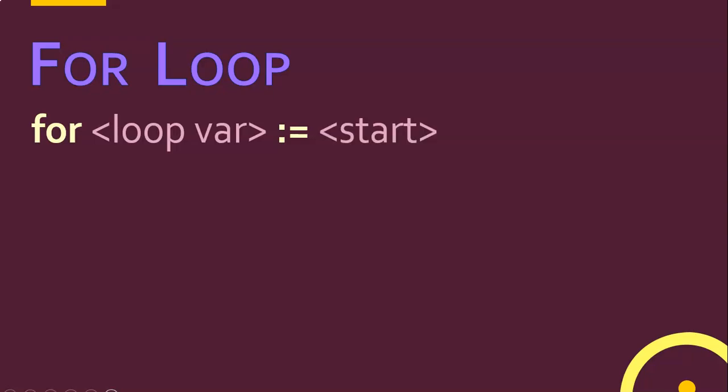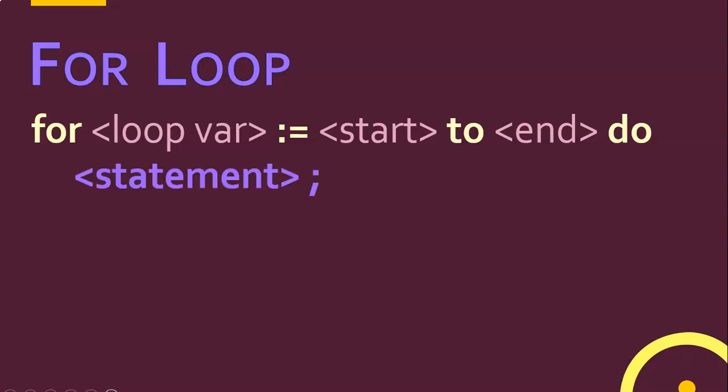Then you have the assignment statement and the start value - what value do we want to start the looping variable at. It doesn't always have to be one; maybe you want to loop from eight onwards. Then you have the word 'to' followed by the value that the looping variable must get to. So if you want to go from one to ten, your start would be one and your end would be ten. After the end value you have the 'do' operator, and then after that you have your statement that you want to repeatedly do.